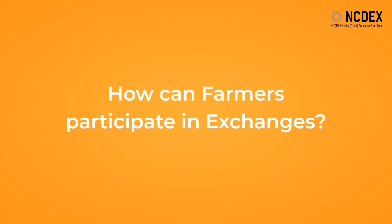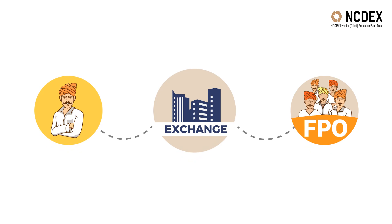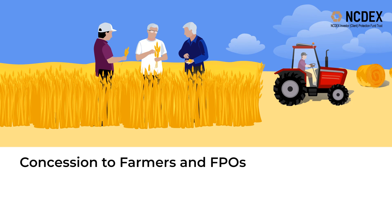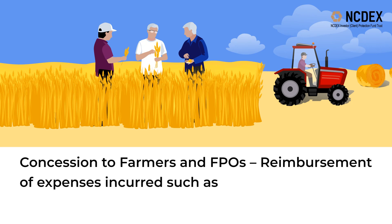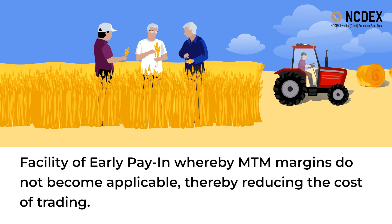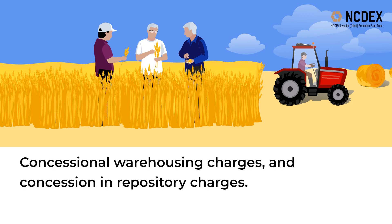Farmers can participate in exchanges by registering as clients with members of the exchange, either directly or by forming or joining FPOs. Exchanges also offer various benefits to participating farmers and FPOs, such as concessions, reimbursement of expenses like assaying charges, cleaning and sorting charges, and delivery fees. There is also a facility of early pay-in, whereby MTM margins do not become applicable, thereby reducing the cost of trading, as well as concessional warehousing charges and concessions in repository charges.